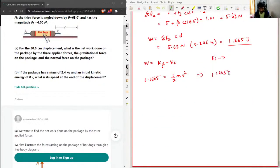So this will be 1.1665 equal to half of 2.4 v square. I'll just multiply both sides with 2, divide both sides with 2.4, so I'll get 1.165 into 2 over 2.4 equal to v square. I'll just take square root on both the sides.